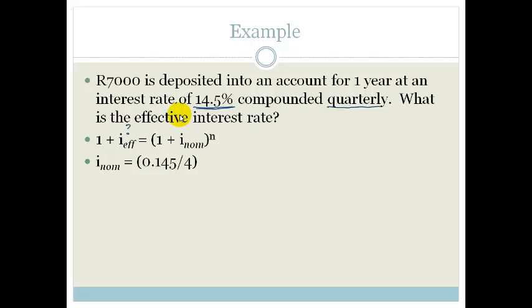They've given us the nominal. Nominal is another word for naming. They've told us what the interest rate is. Now the nominal interest rate is 0.145. It's divided by 4 because it's compounded quarterly. The n would be for one year but because it is paid 4 times, it's quarterly, it's 4 times for that one year. So if we do this question we have 1 plus i effective is equal to 1 plus 0.145 all over 4 to the power of 4.